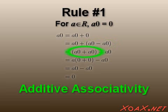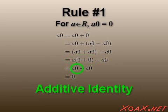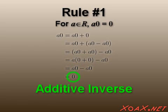Next, associativity lets us regroup the terms. The distributive property allows us to factor out the a term. The additive identity allows us to replace zero plus zero by zero. Finally, the property of additive inverses allows us to replace this sum with zero.